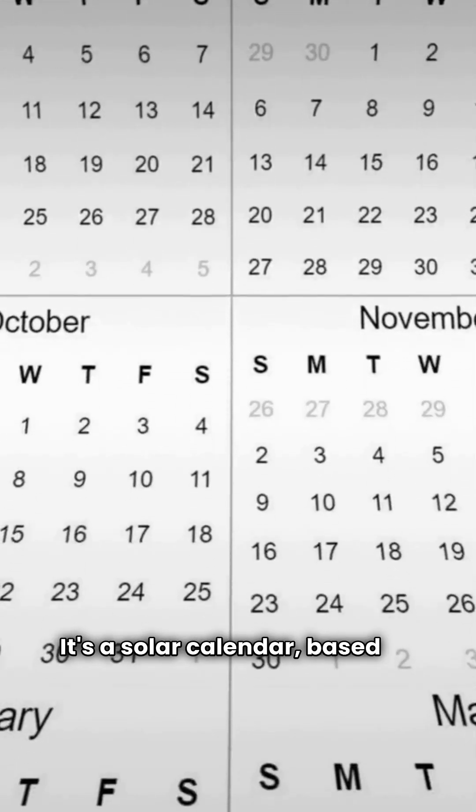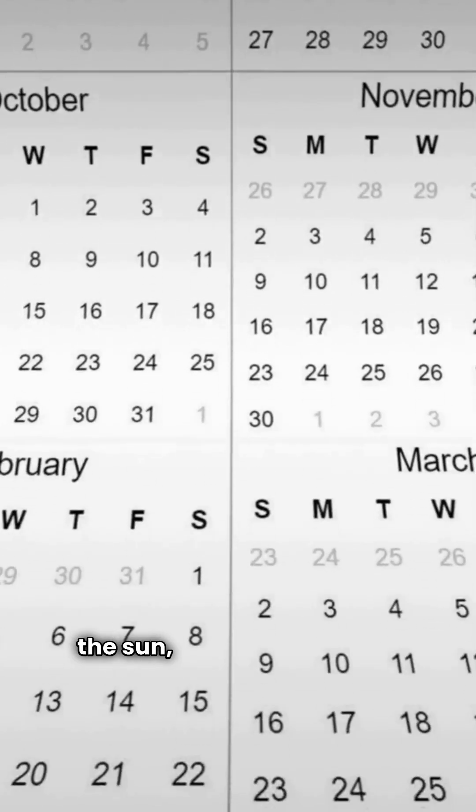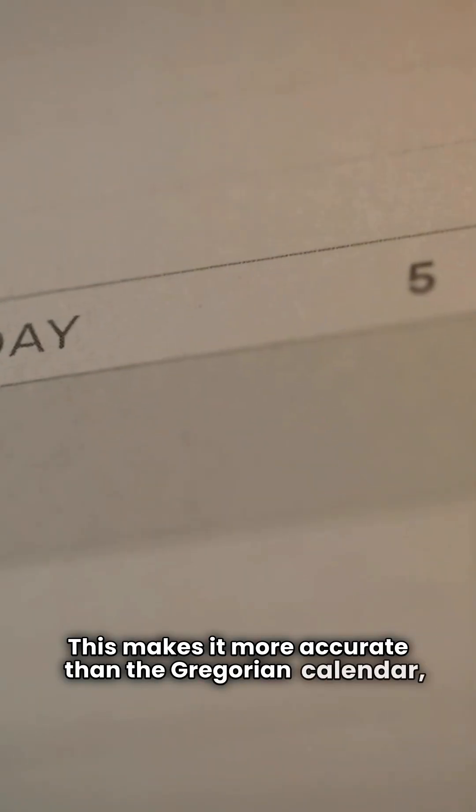It's a solar calendar based on the Earth's orbit around the sun, starting each year on the vernal equinox. This makes it more accurate than the Gregorian calendar.